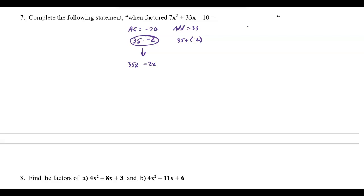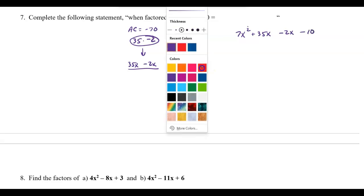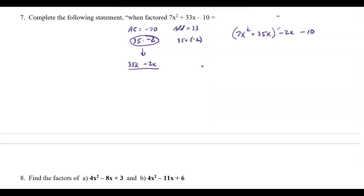I'm going to rewrite this quadratic as 7x² plus 35x minus 2x minus 10. Then from here I'm going to group the first two terms and the last two terms.